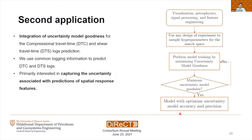The second application of the uncertainty model goodness is the integration of our metric in the prediction of compressional travel time and shear travel time logs. This data-driven solution uses information from other logs. In this workflow, I use neutron deep resistivity and density logs, but they can be exchanged by any other physical measurement. We are primarily interested in capturing the uncertainty associated with predictions of spatial response features. Similarly as before, we begin with visualization, signal processing, feature engineering, followed by hyperparameter selection via design of experiments, and then model training and evaluation using the uncertainty model goodness metric.